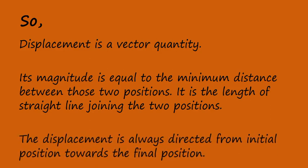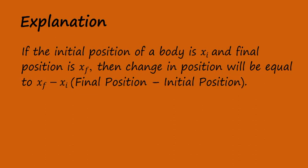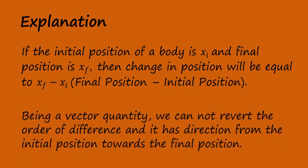So, displacement is a vector quantity. Its magnitude is equal to the minimum distance between those two positions — it is the length of the straight line joining the two positions. The displacement is always directed from the initial position towards the final position. If the initial position of a body is xi and the final position is xf, then the change in position will be equal to xf minus xi, that is final position minus initial position. Being a vector quantity, we cannot reverse the order of the difference, and it has direction from the initial position towards the final position.